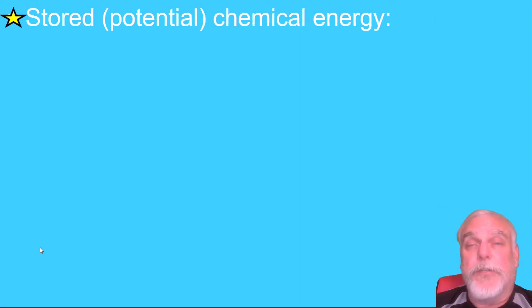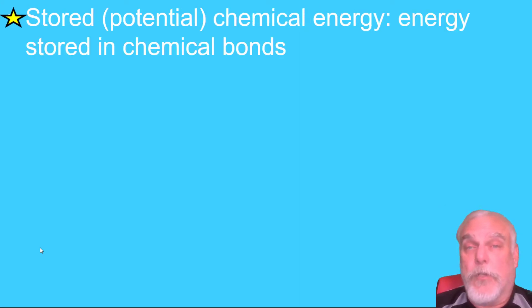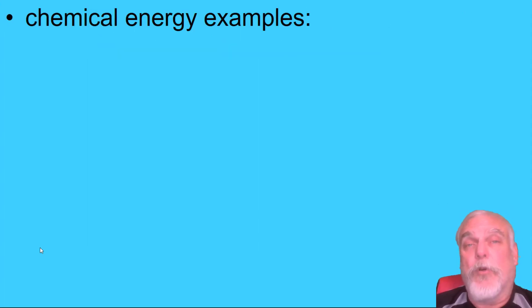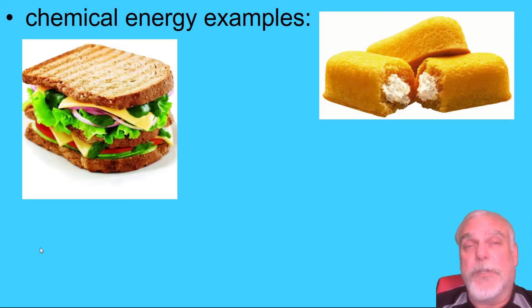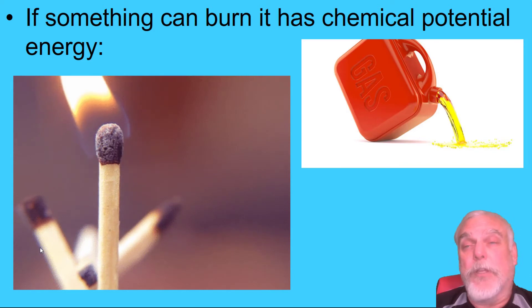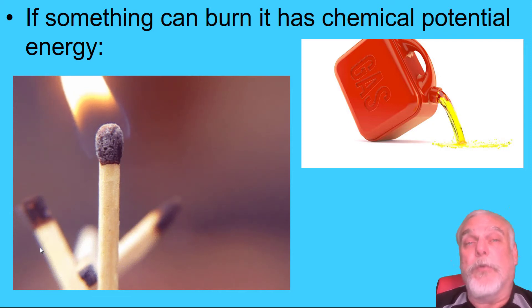Our first example is chemical energy. Stored or potential chemical energy is defined as the energy stored in chemical bonds — when bonds are broken, they can release energy. Examples include a battery, food (you may have heard the term 'burning calories'), and a gallon of gasoline. When you burn gasoline, it breaks chemical bonds and releases a tremendous amount of energy.